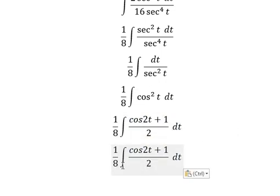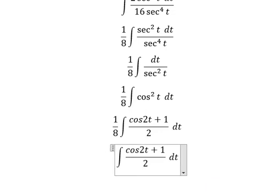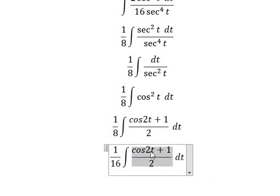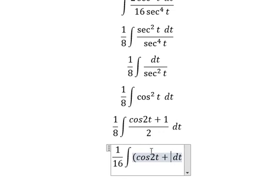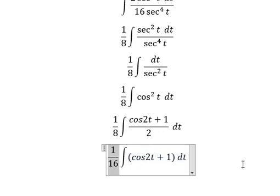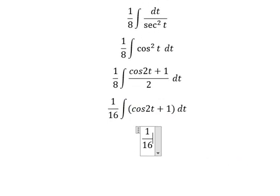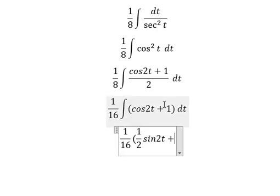Combining the constants, 1/2 and 1/8 give us 1/16. So we have 1/16 times the integral of (cos 2t + 1) dt. The integration of cos 2t is (1/2) sin 2t, and the integral of 1 is t.